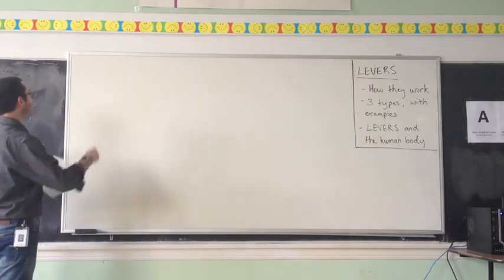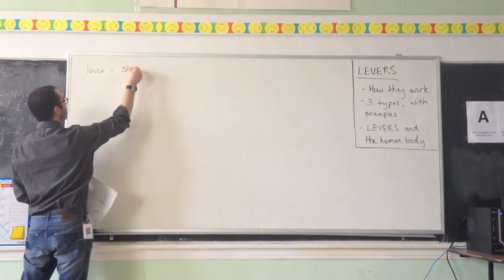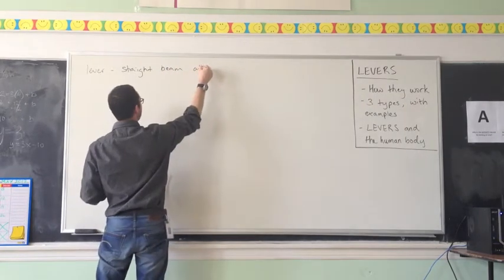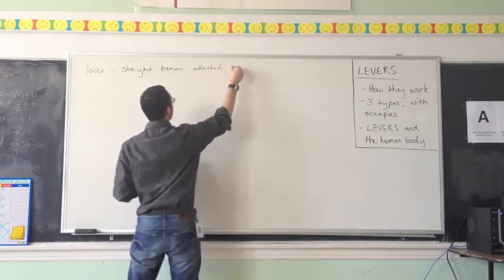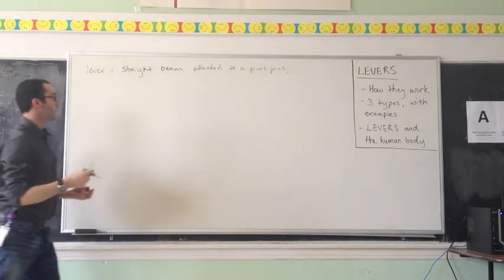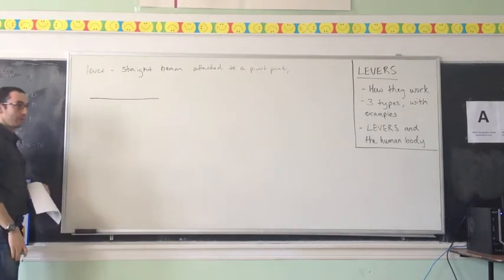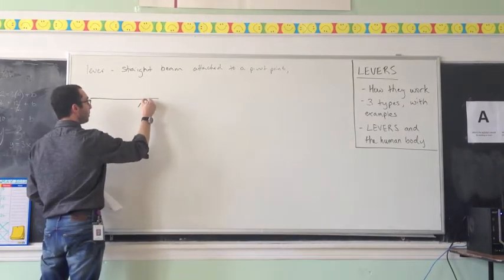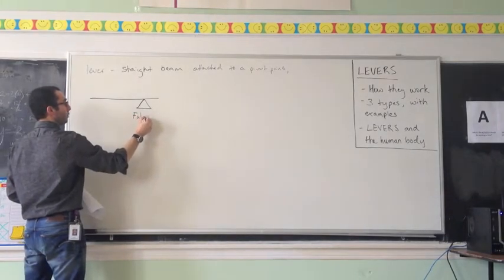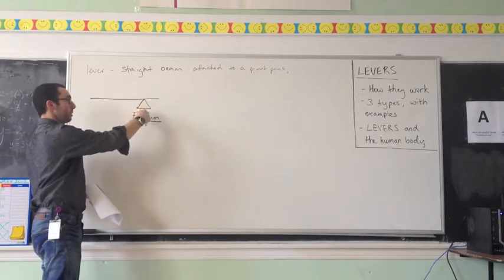What is a lever? A lever is just a straight beam attached to a pivot point. We can draw that diagrammatically by doing a straight line, which represents a beam, and a little triangle, which represents the pivot point, called a fulcrum. Those are really the two physical parts of a lever: a beam and a fulcrum.